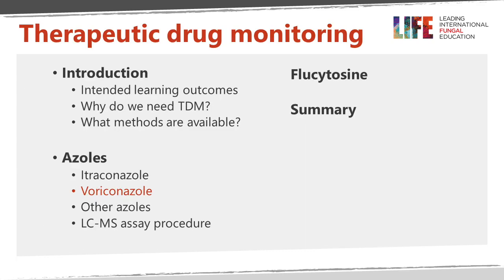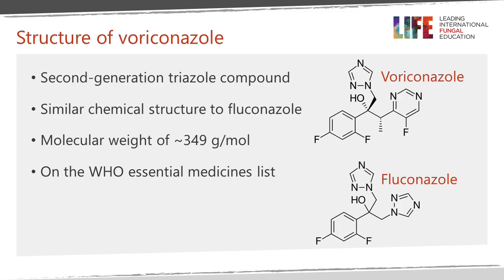The other azole important to monitor for TDM purposes is voriconazole. Its molecular structure is fairly similar to fluconazole, but it behaves quite differently — fluconazole is mostly water-soluble and excreted in the urine, whereas voriconazole is metabolized by the liver. Like itraconazole, it is on the WHO essential medicines list and is a very important drug for the treatment of invasive and chronic pulmonary aspergillosis.